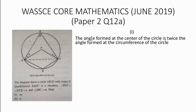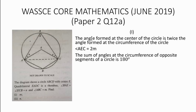The angle at the center of a circle is twice the angle formed at the circumference of that circle, so we can state that angle AEC equals 2m. Also, the sum of opposite angles at the circumference of a circle is 180 degrees, so we can state that angle ADC plus m equals 180 degrees.